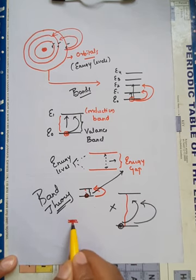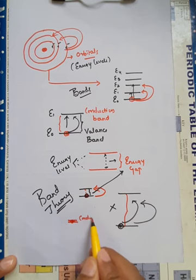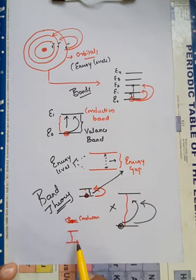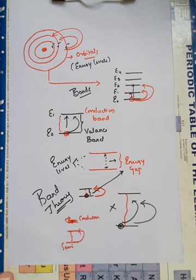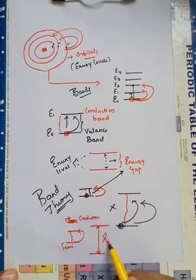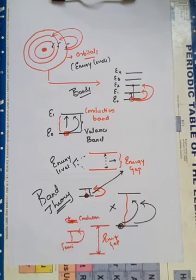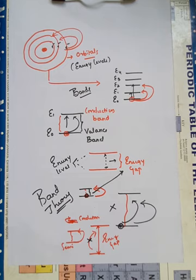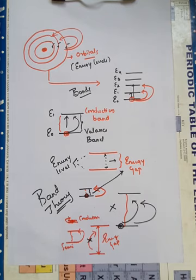In conductors there is no specific gap — it can overcome from one energy level to another. In semiconductors the energy gap is very less, so it can jump from valence band to conduction band. In insulators there is a greater difference — the energy gap is more — so there is no chance of movement of electrons from one energy level to another. Band theory is nothing but energy levels taken in the form of bands. Like this we can explain band theory for electrical conductivity in case of solids.